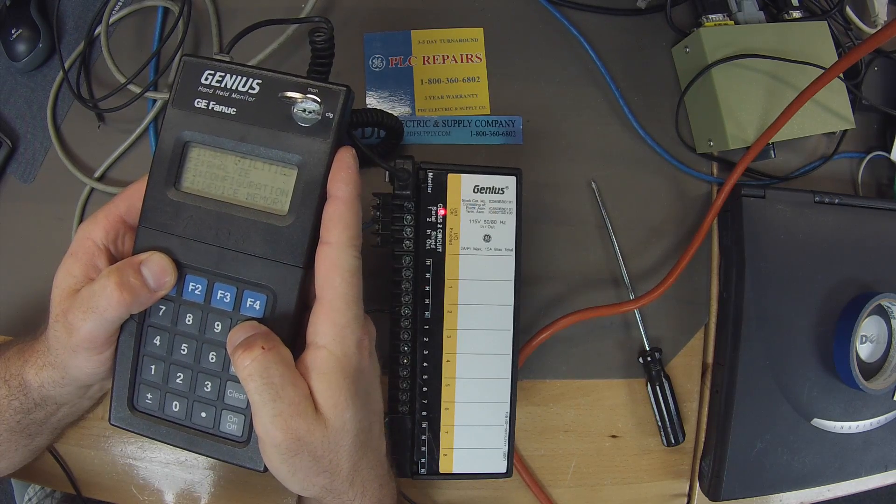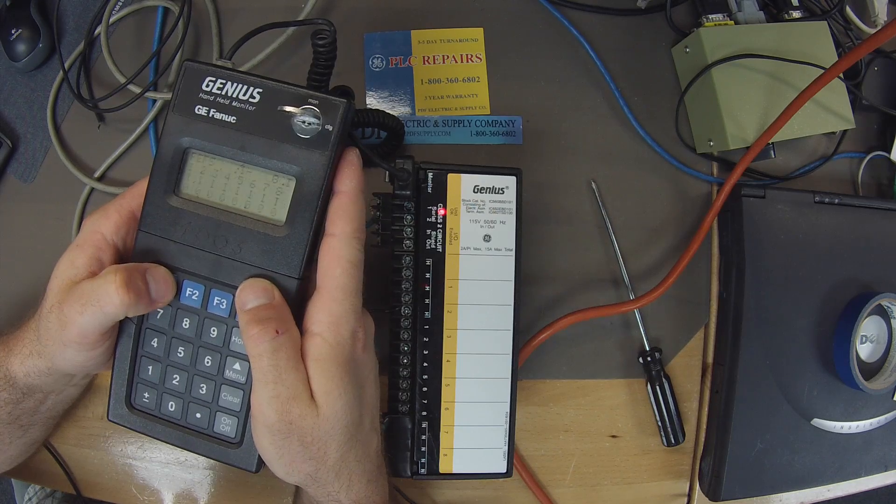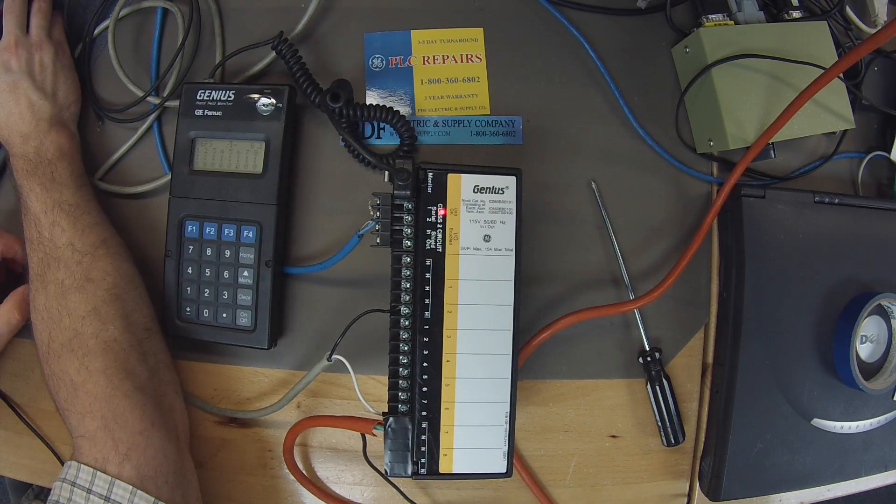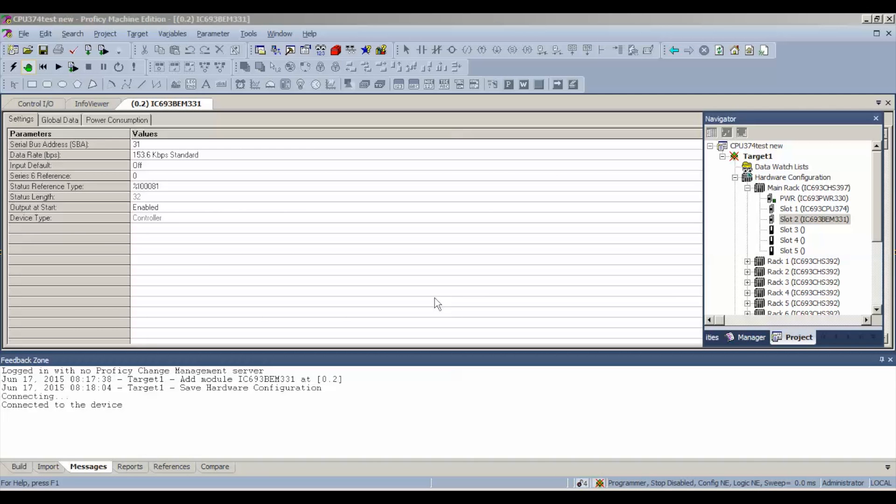We're going to go back to home and analyze, F1 monitor block. We're going to stop right there for a second and jump into Proficy Machine Edition. Proficy Machine Edition, this is going to be part of the test. As I mentioned before, the PWR-330, CPU-374, and the BEM-331, I have this all set up in my rack right here. This is for a genius block test. I've got the tab open for the IC693-BEM-331, I'm going to go to global data.